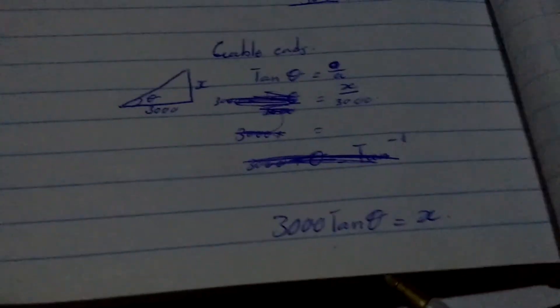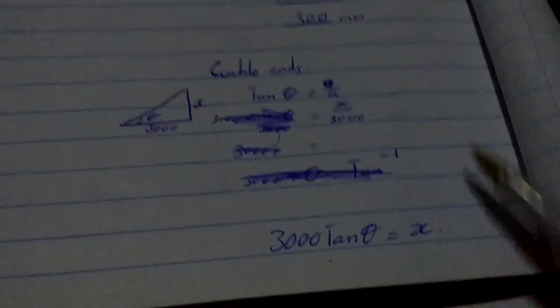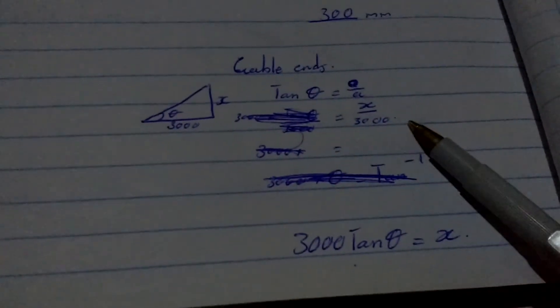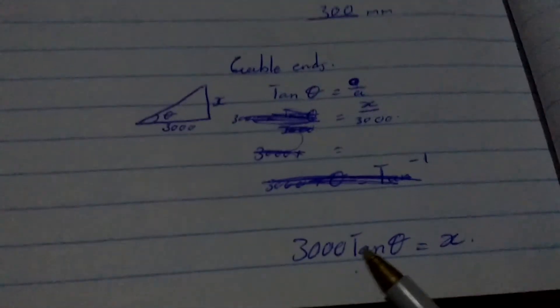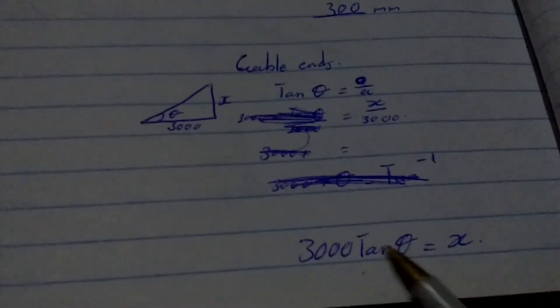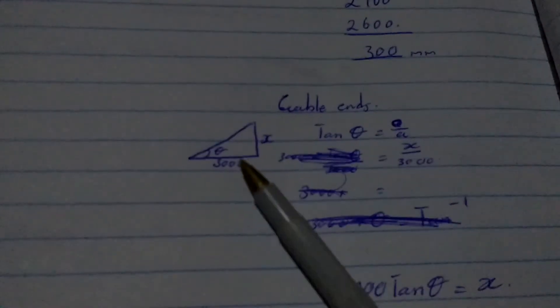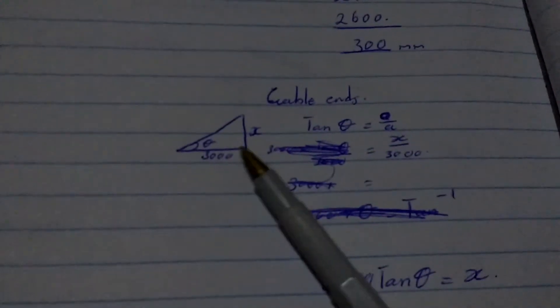So our answer, we're going to get it. If we're saying 30,000, that's here, we're going to make the change of subject so that X will become our subject. So if we say 30,000 tan theta, which will be our given angle, you're on this plan, we're not given the angle.